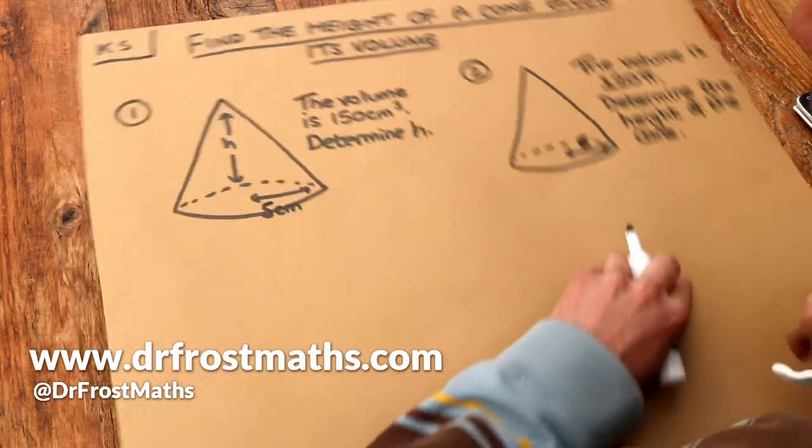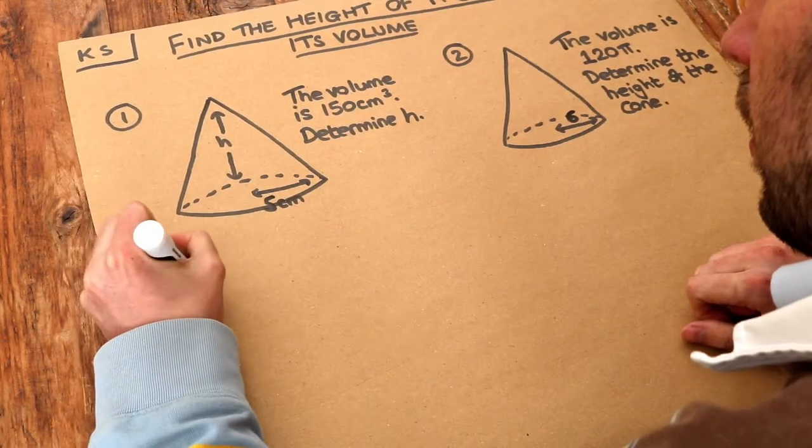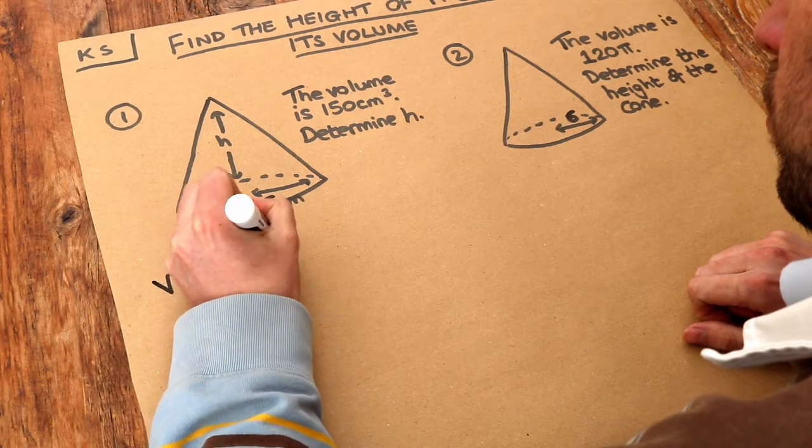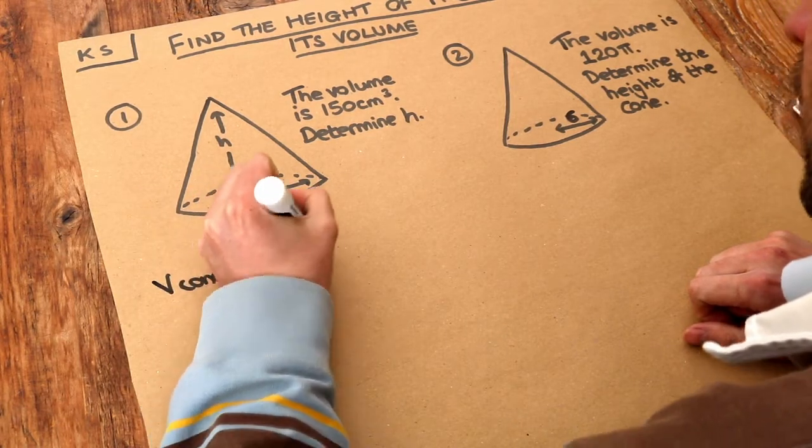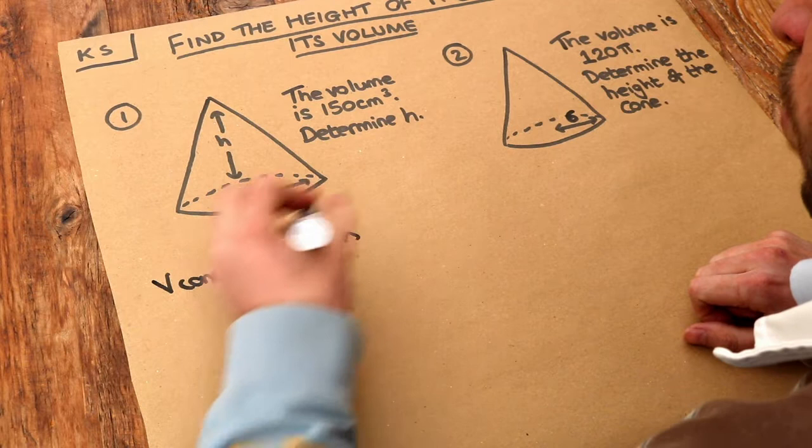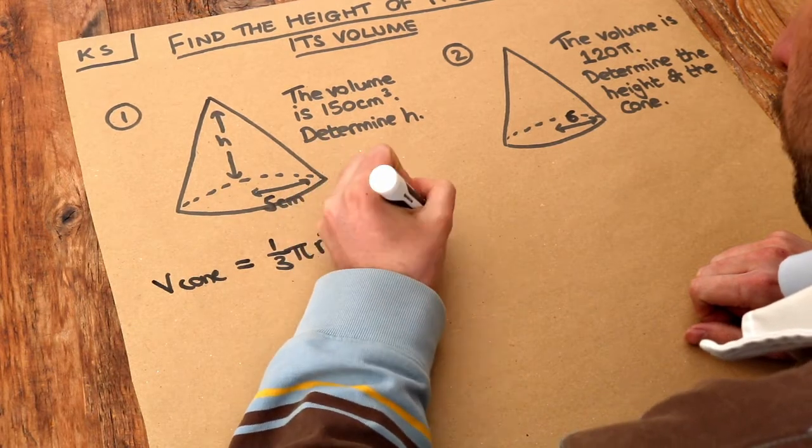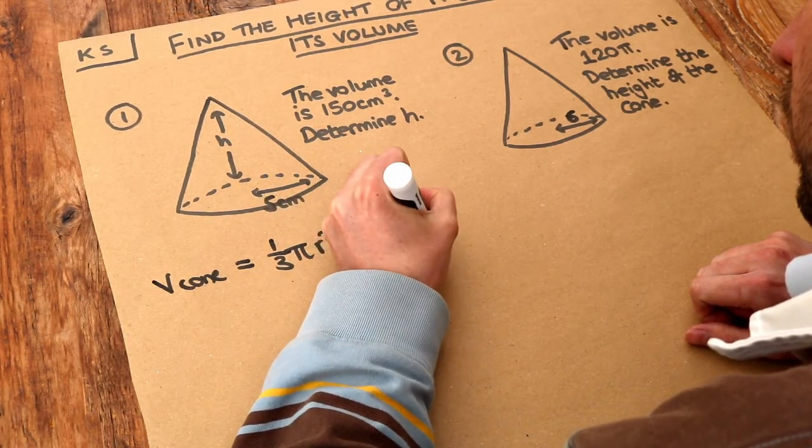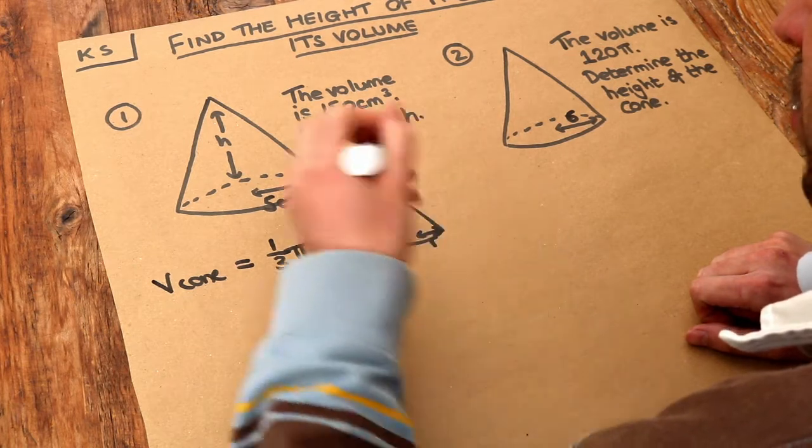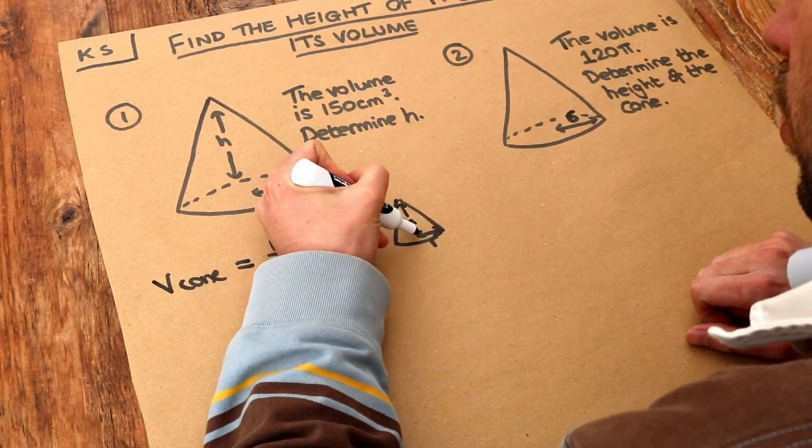Now in the previous video we saw how to find the volume of the cone. It was just equal to a third pi r squared h, where the radius of the cone was r, the radius of the circle at the bottom, and the height of the cone was h.